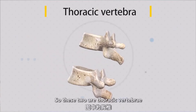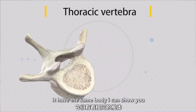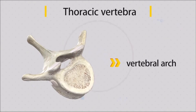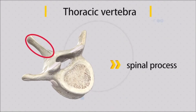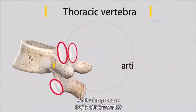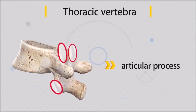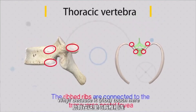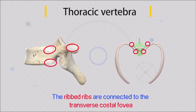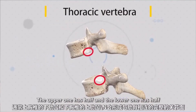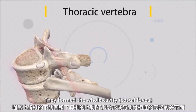This is the thoracic vertebra. The thoracic vertebra has the same body, arch, and spinous process, and transverse process, and articular process. We have an articular surface on the back side of the body because the rib attaches here — that's what we call the costal facet. The upper half and lower half together form the whole cavity that contains the head of the rib.